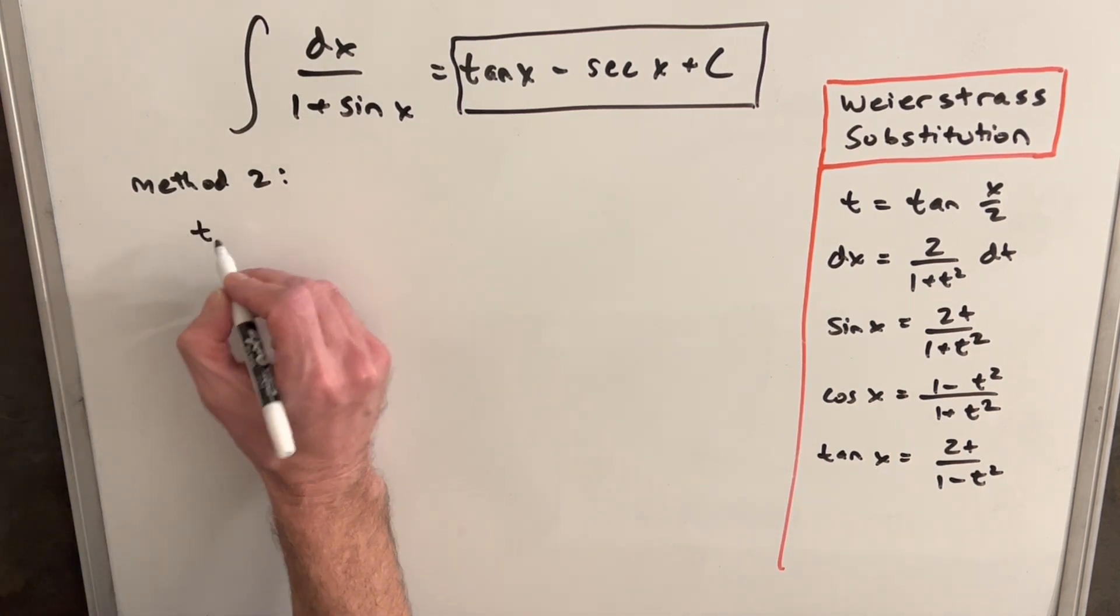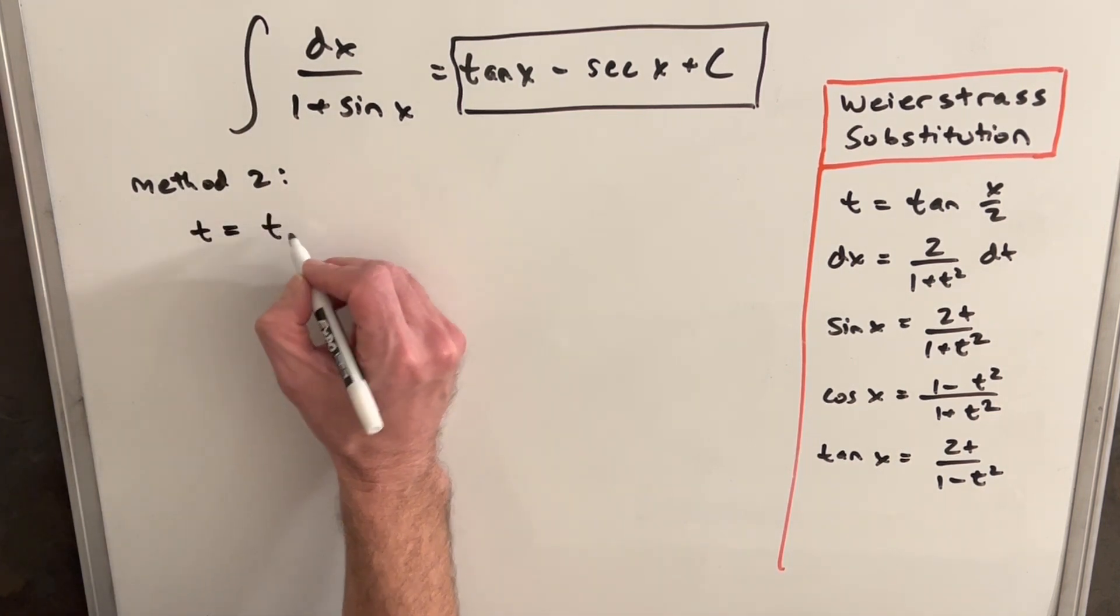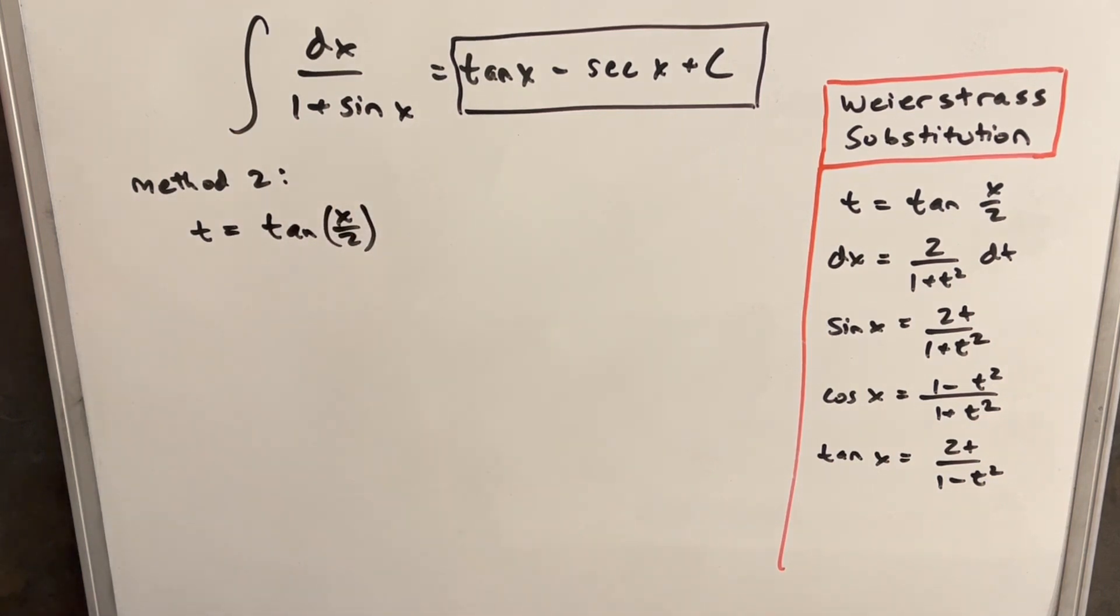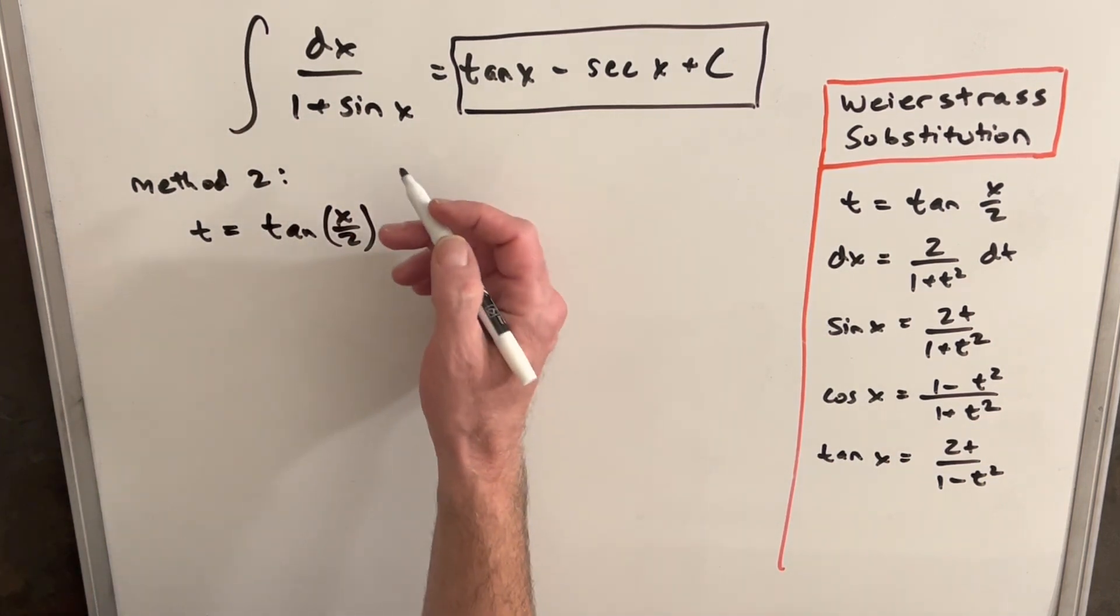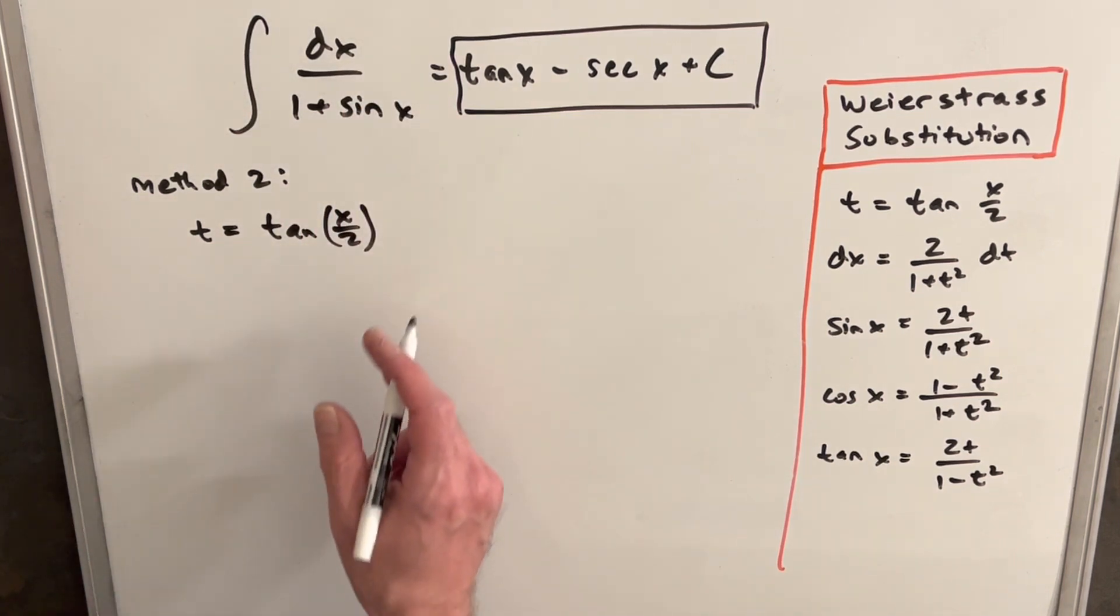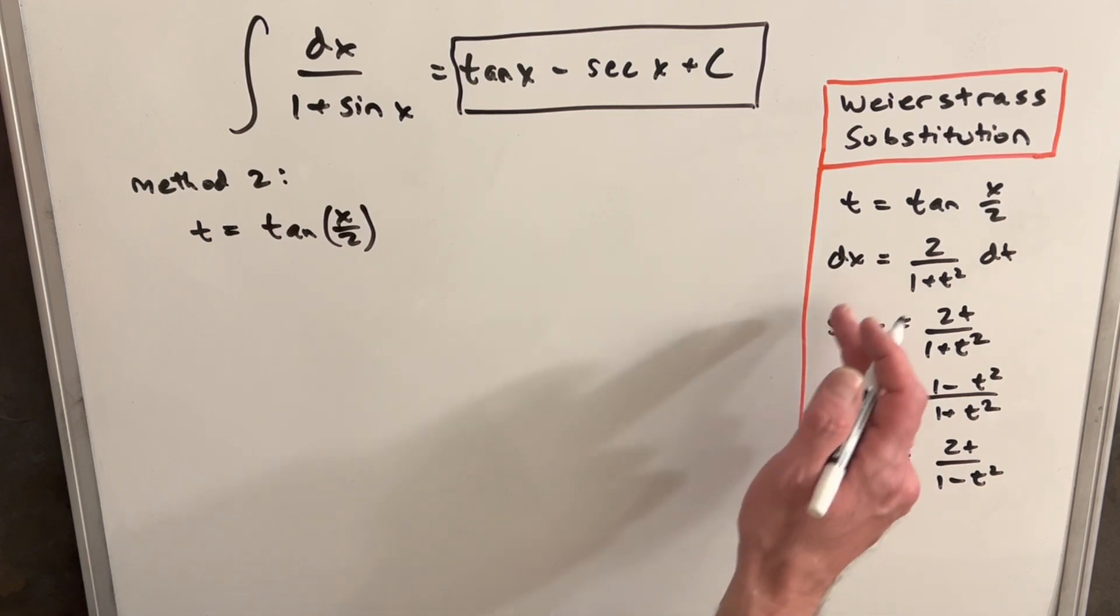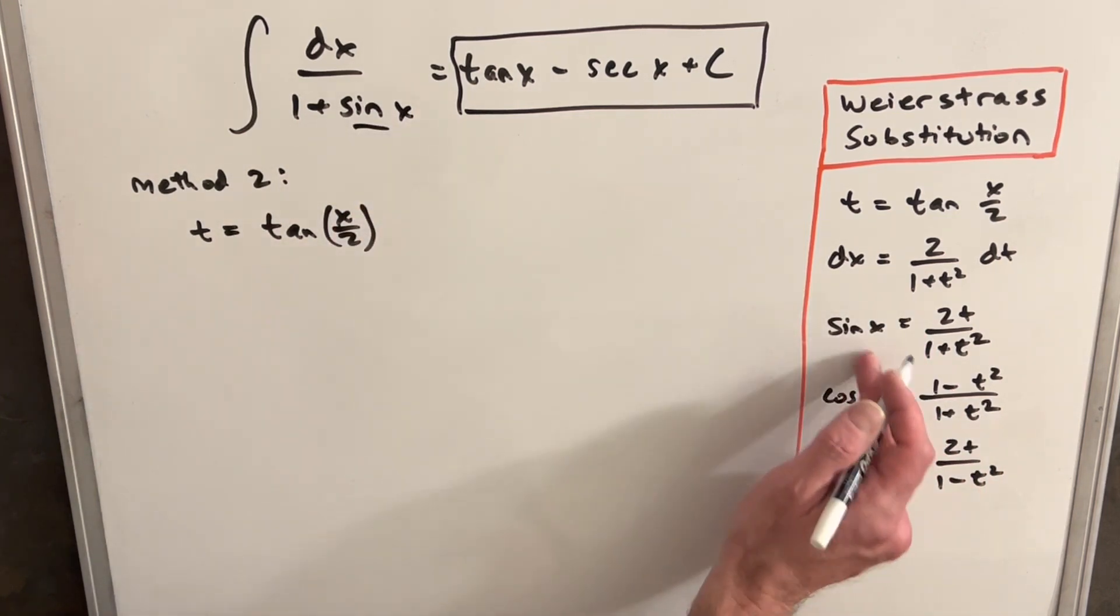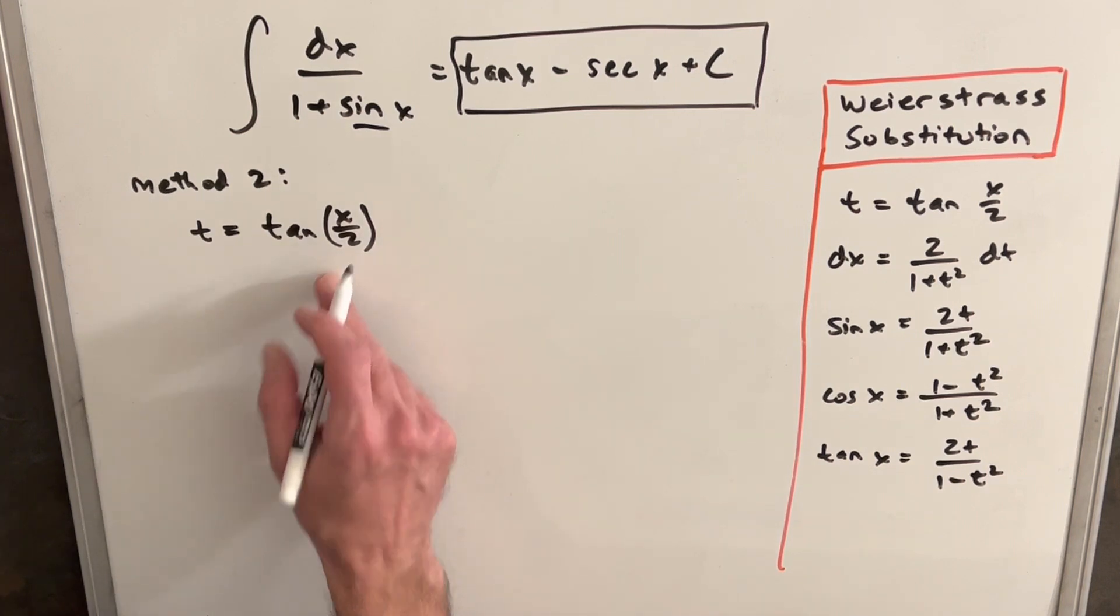So what we're going to do is we're going to make this substitution, t equals tan of x over two. And of course, that seems really odd because we don't have any of that in this expression. But what you'll notice is we have everything we need derived. We could find a dx value, and we need sine, but we found that through manipulating this.